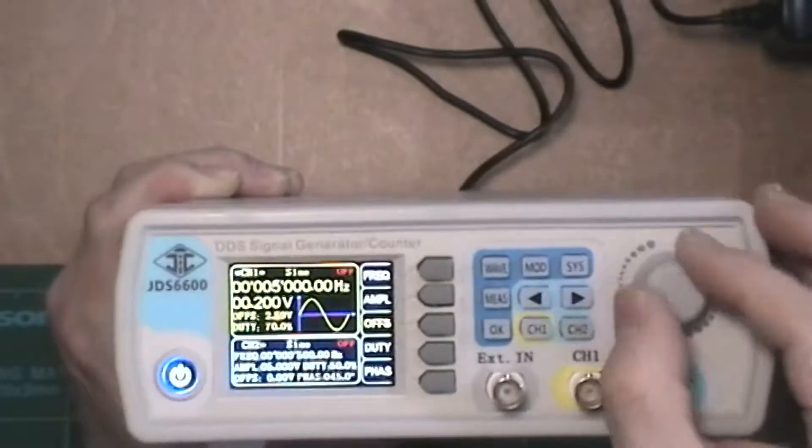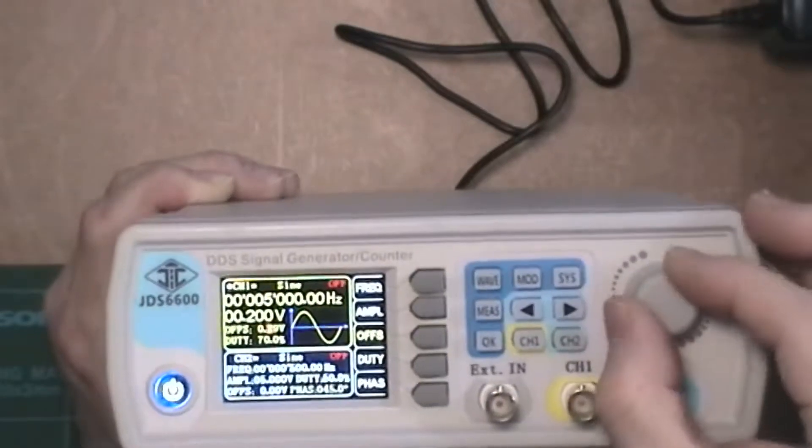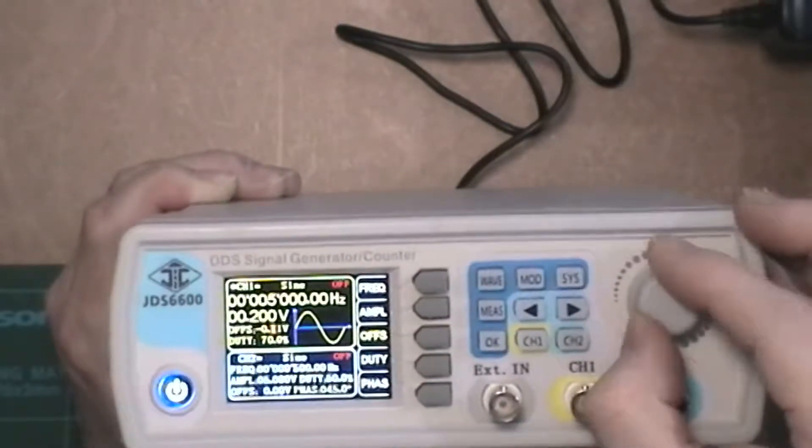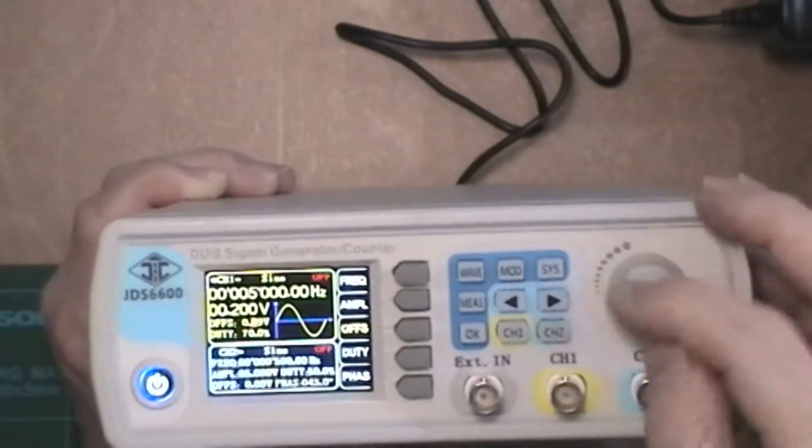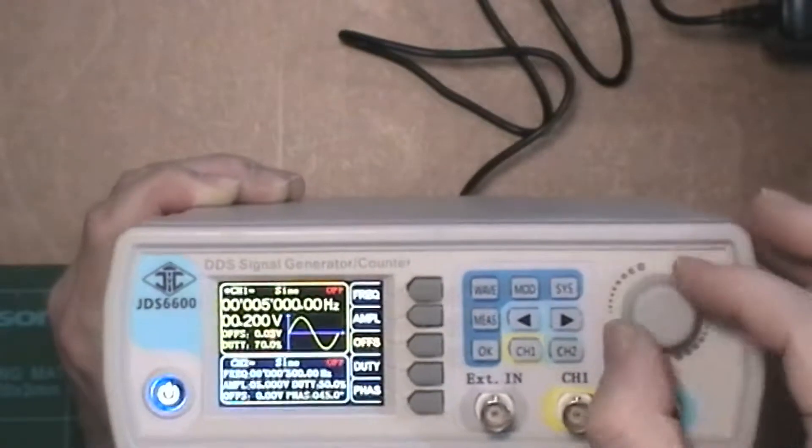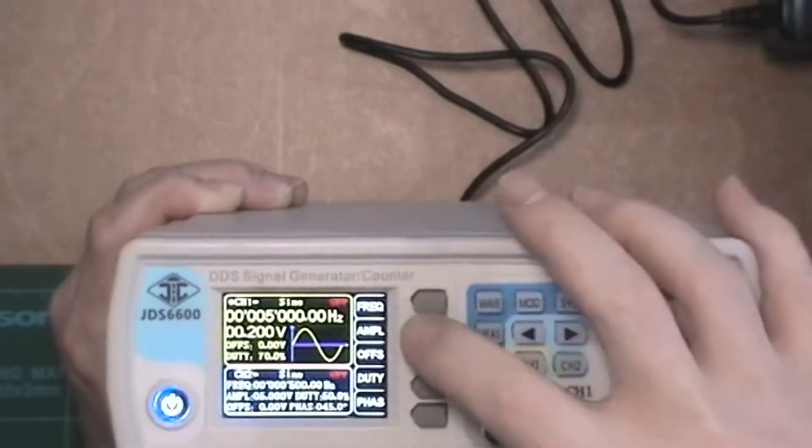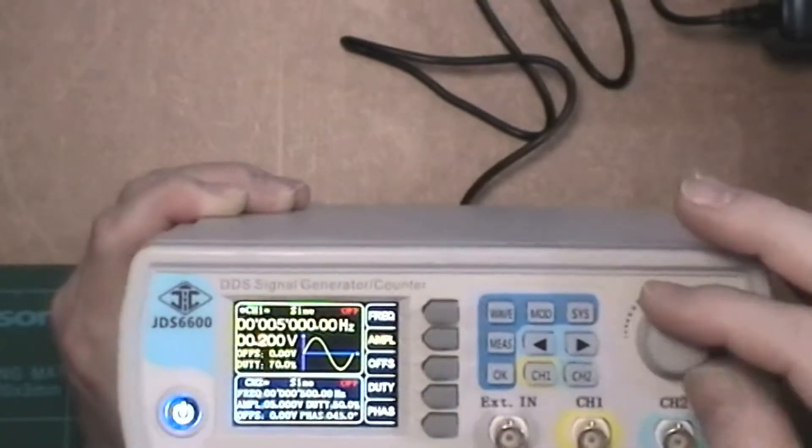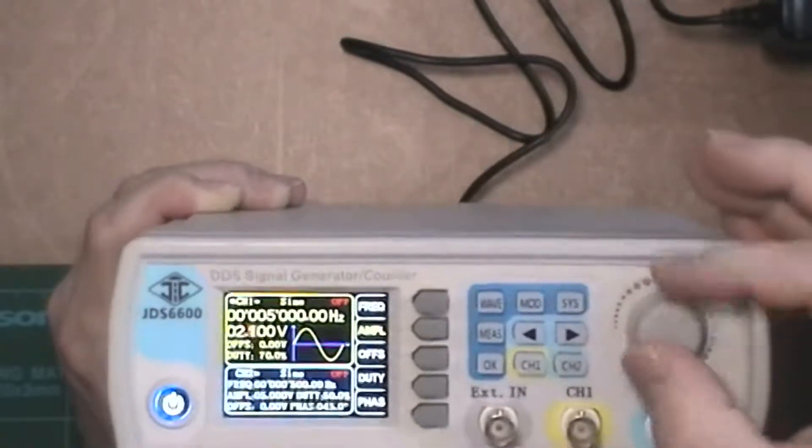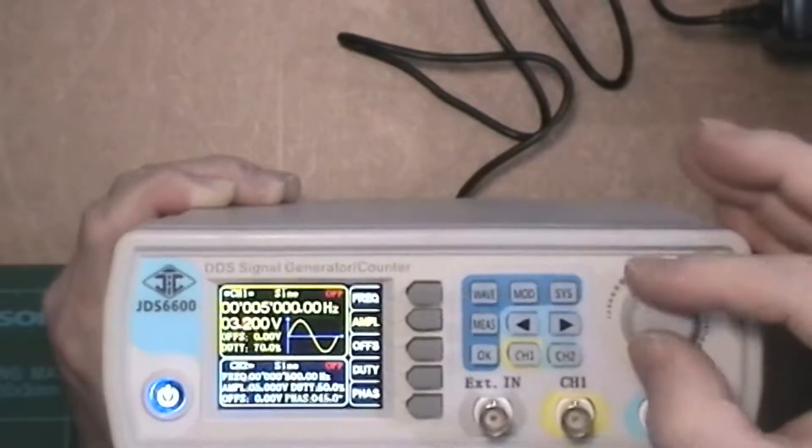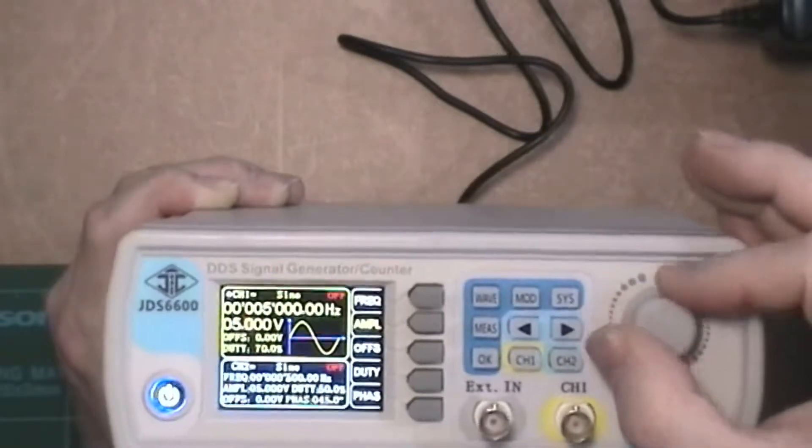And it goes negative offset, as an offset should. Turn that down to zero. Turn the offset back off. Go back to the amplitude and turn that back up to five volts where I had it before. There we go.